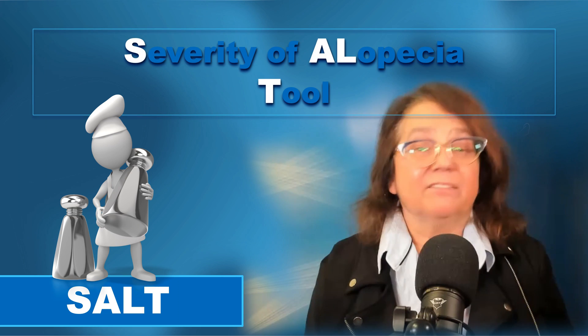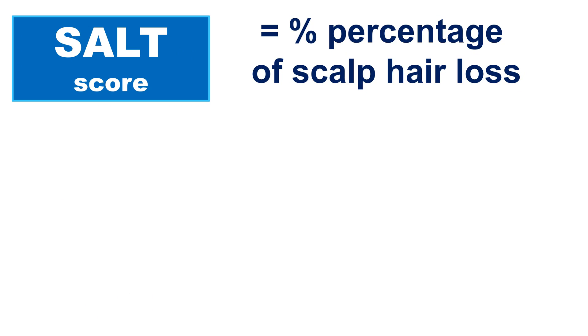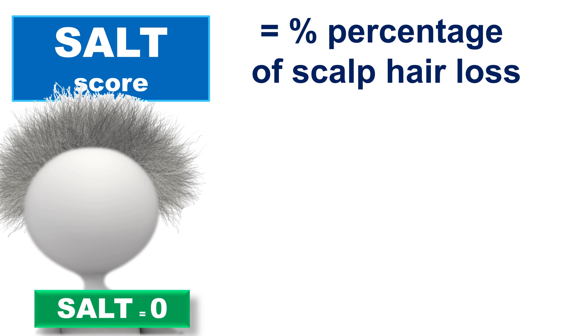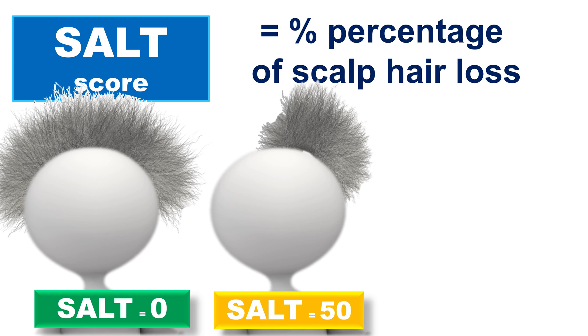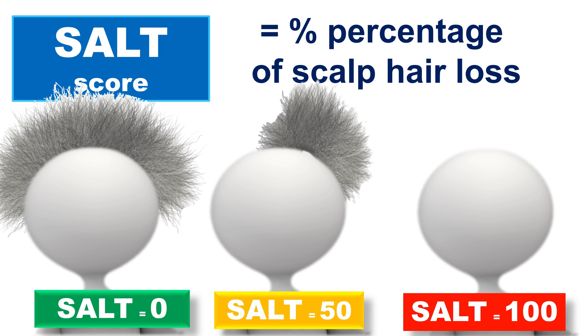Our decision about whether or not to treat a patient with a systemic treatment will depend on the SALT score. The SALT score measures the severity of alopecia areata — it stands for Severity of Alopecia Tool. This is a simple scoring system which allows evaluating the percentage of scalp hair loss. A patient with 100% scalp covered with hair has a SALT score of 0, a patient with 50% hairless patches has SALT 50, and a patient with alopecia totalis or universalis has SALT 100.